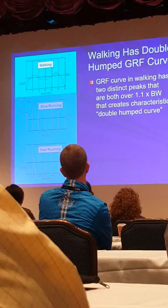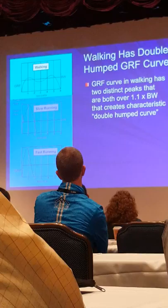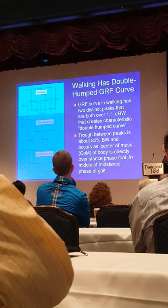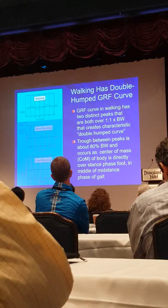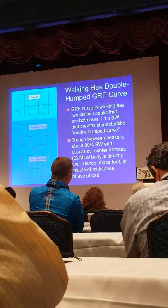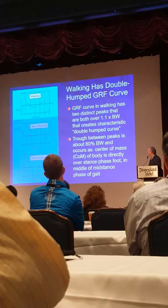The second hump is when the heel is coming off the ground. In the middle, the ground reaction force is actually less than body weight — the trough between the curves is about 80% body weight. The peak of the curves is about 1.1 to 1.2 times body weight. So in walking, forces don't exceed 1.1 to 1.2 times body weight, and during mid-stance we actually have less than one body weight occurring.